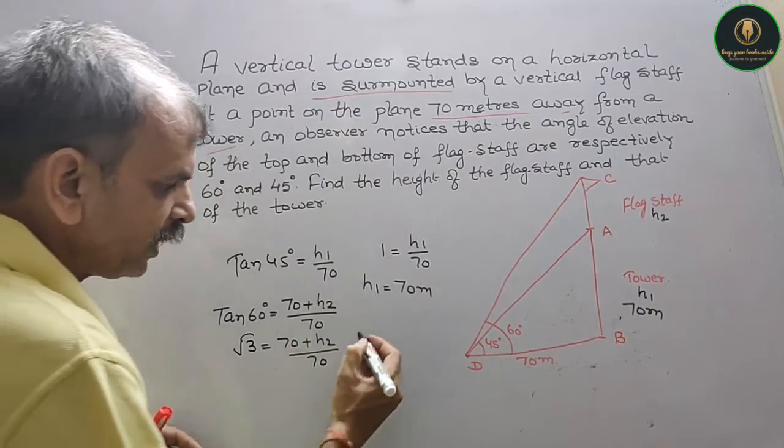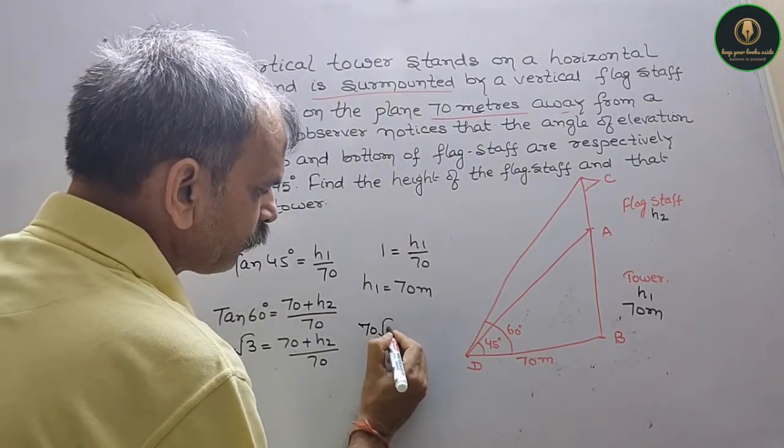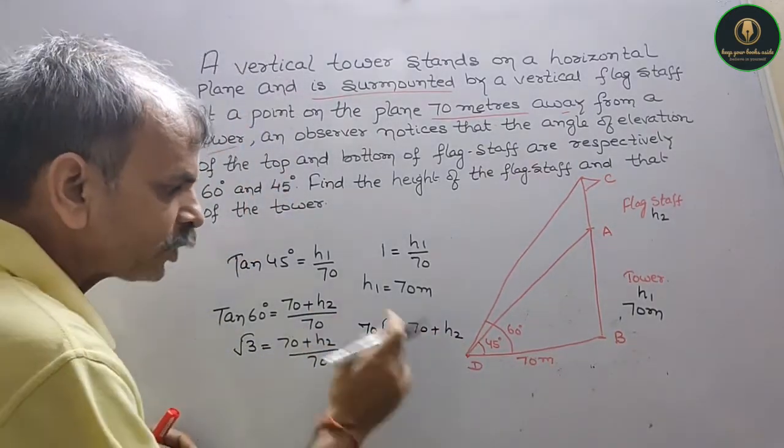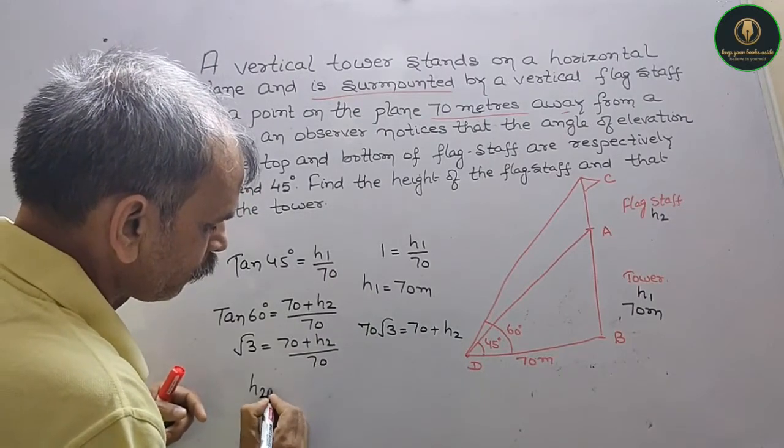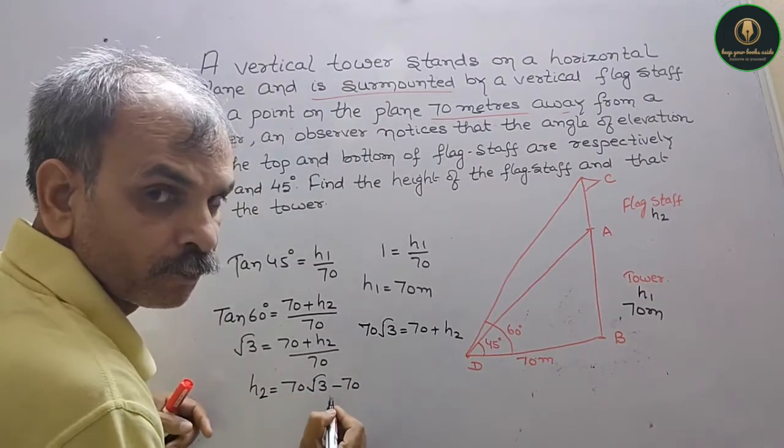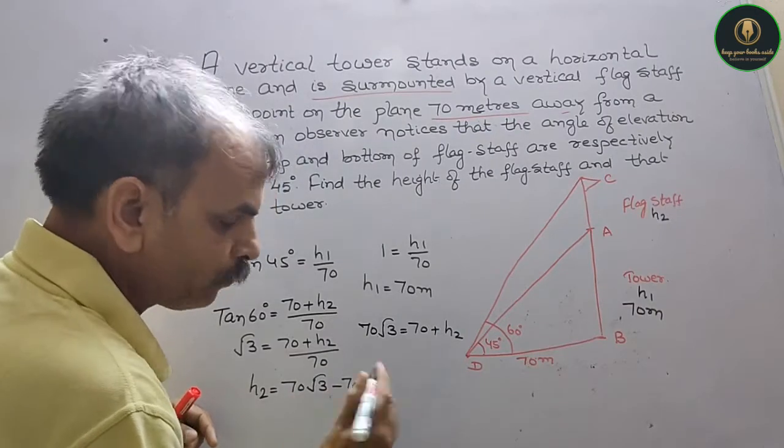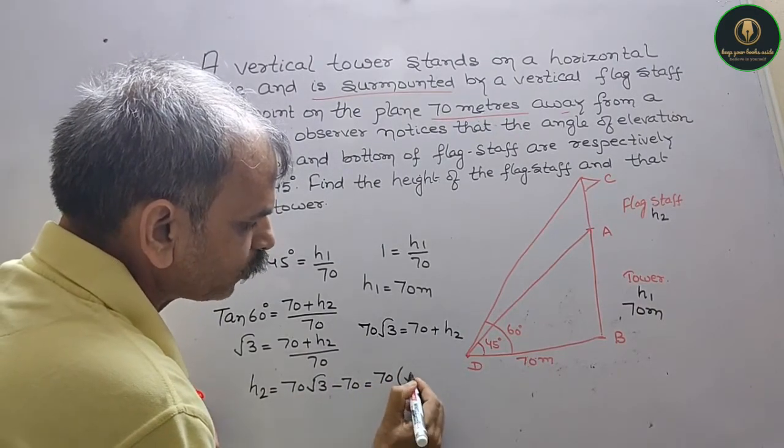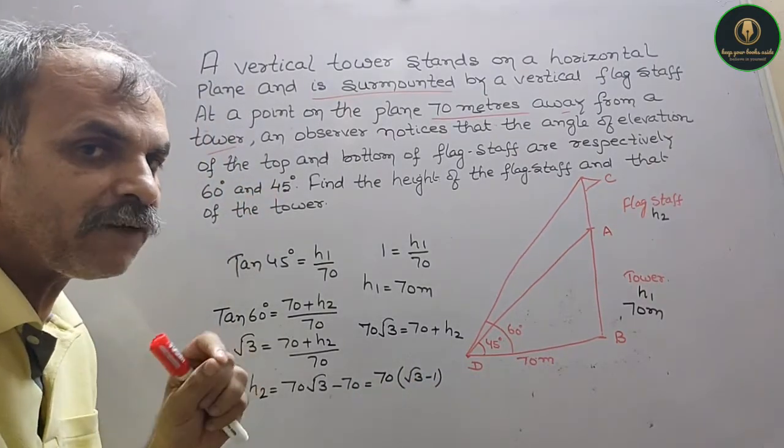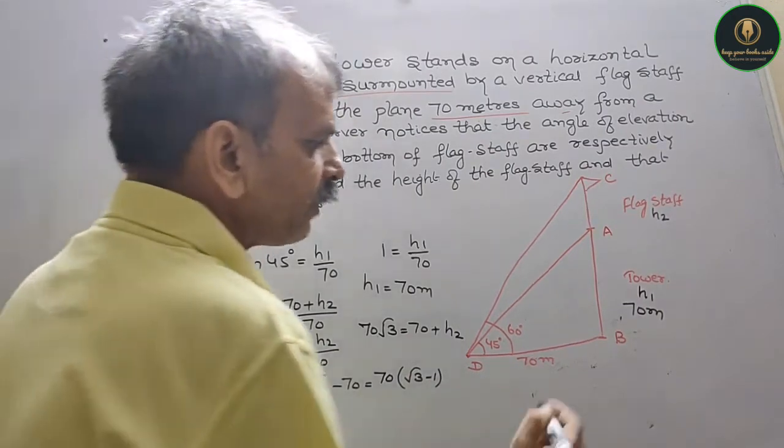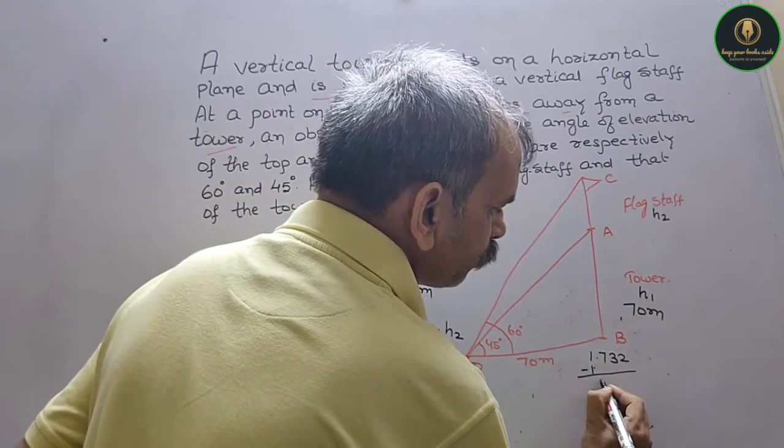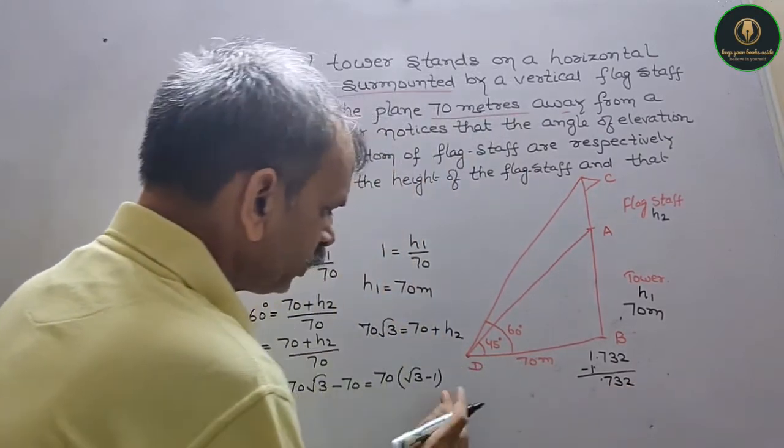Now cross multiply. You will get 70 root 3 equals 70 plus h2. So h2 equals 70 root 3 minus 70. That is equal to 70 common, so you get root 3 minus 1. Root 3 minus 1 equals 1.732 minus 1. The value of root 3 is 1.732 minus 1 gives you 0.732.